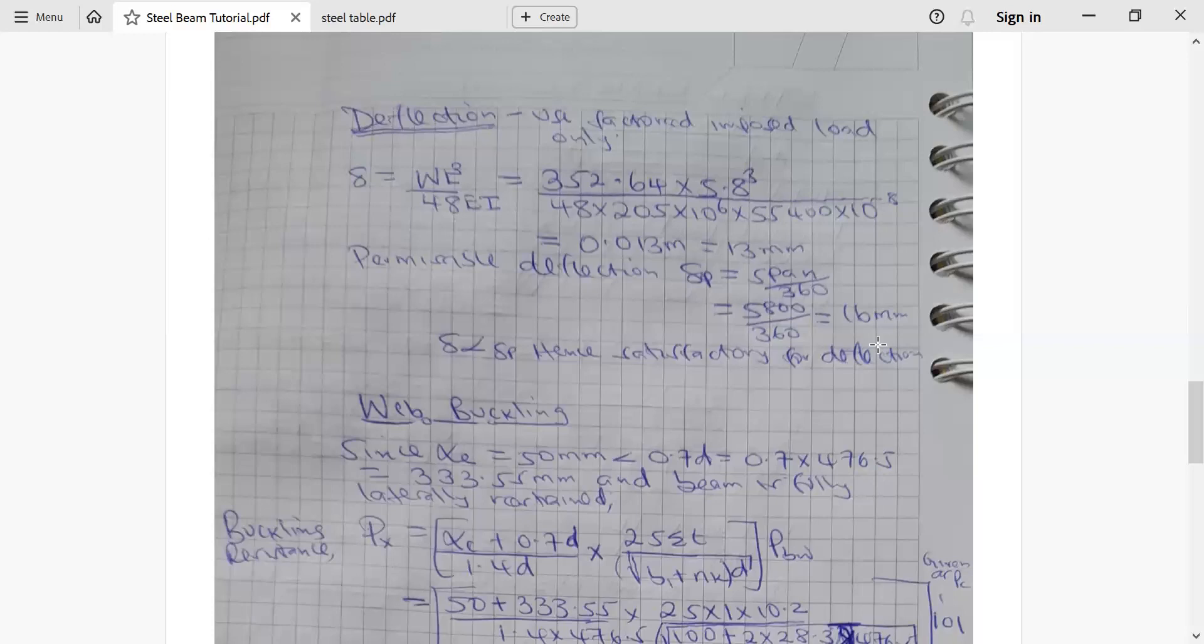I can convert it to millimeter by multiplying by 1000 to get 13 millimeter. From there I go for permissible deflection. Permissible deflection for this case of beam is given by the span of the beam divided by 360. It's a fixed formula span over 360, which is 5,800 divided by 360 is 16 millimeter. So the beam is allowed to deflect up to 16 millimeter, but the actual deflection is only going to 13 millimeter. As you can say, the beam satisfies deflection criteria.